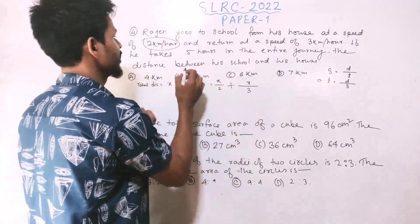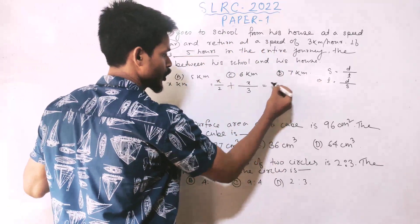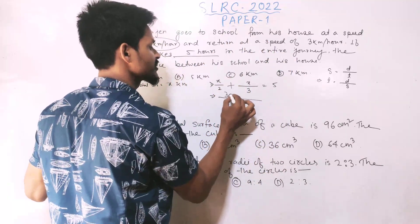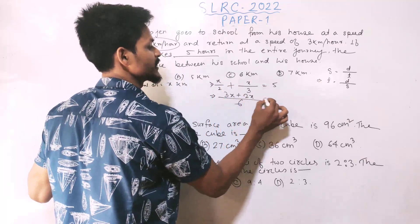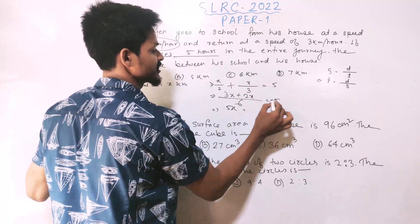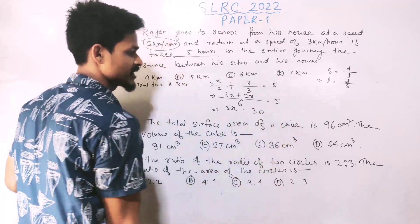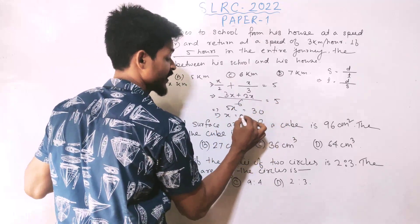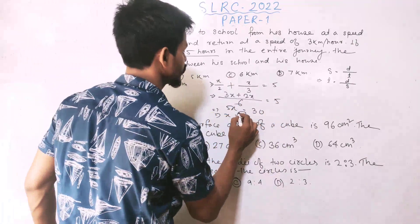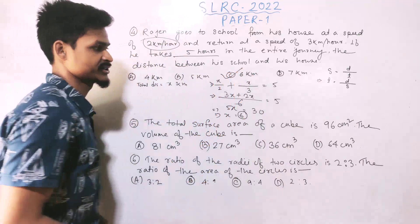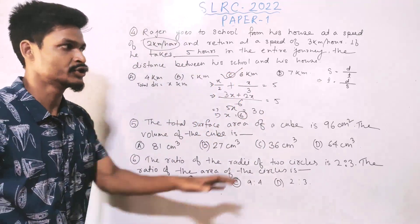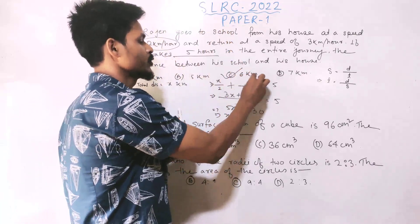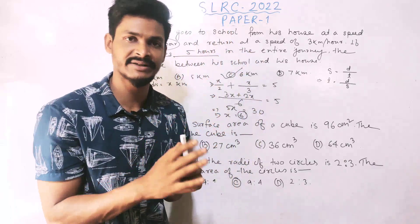After cross multiplication: 5 times x equals 30, so x equals 6. The total distance is 6 km. Answer is option 6. You can also solve this as: x/2 plus x/3 equals 5 total time.